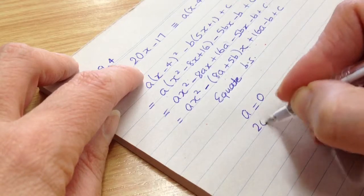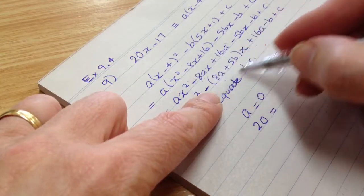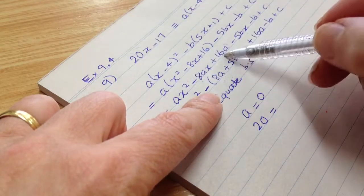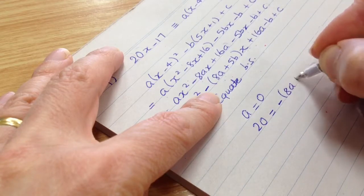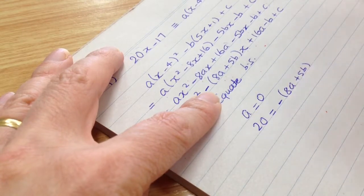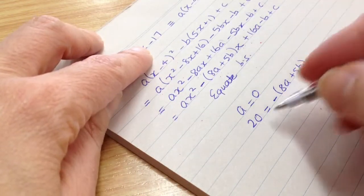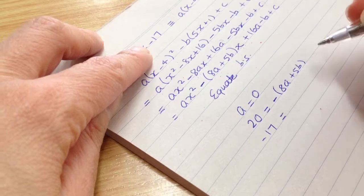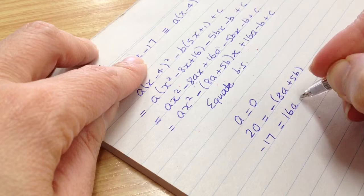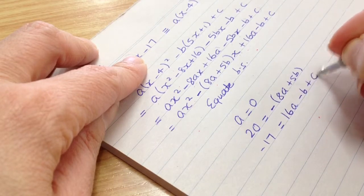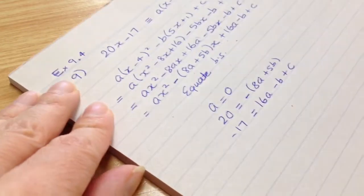All right, let's equate the x terms. 20 is equal to, there's the coefficient of the x term there. So that coefficient gets equated with that coefficient. All right, so it's minus 8a plus 5b. All right, and then the constant is minus 17 and you equate that with the 16a minus b plus c. All right, all of that gets equated with the minus 17.